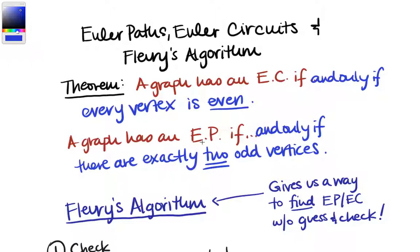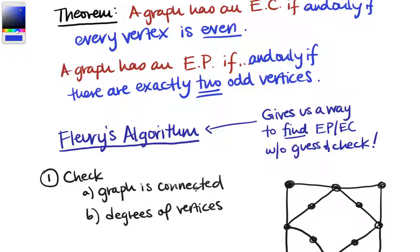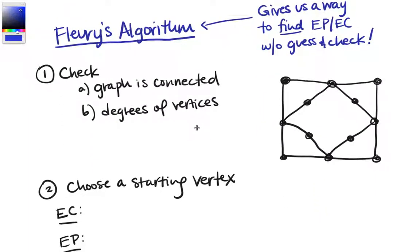Sometimes you can find an Euler path or an Euler circuit by guessing and checking and just playing around with the graph. And what we're going to talk about here is Fleury's algorithm, which gives us a way to find an Euler path or Euler circuit without having to guess and check. It's a more direct way to do it.